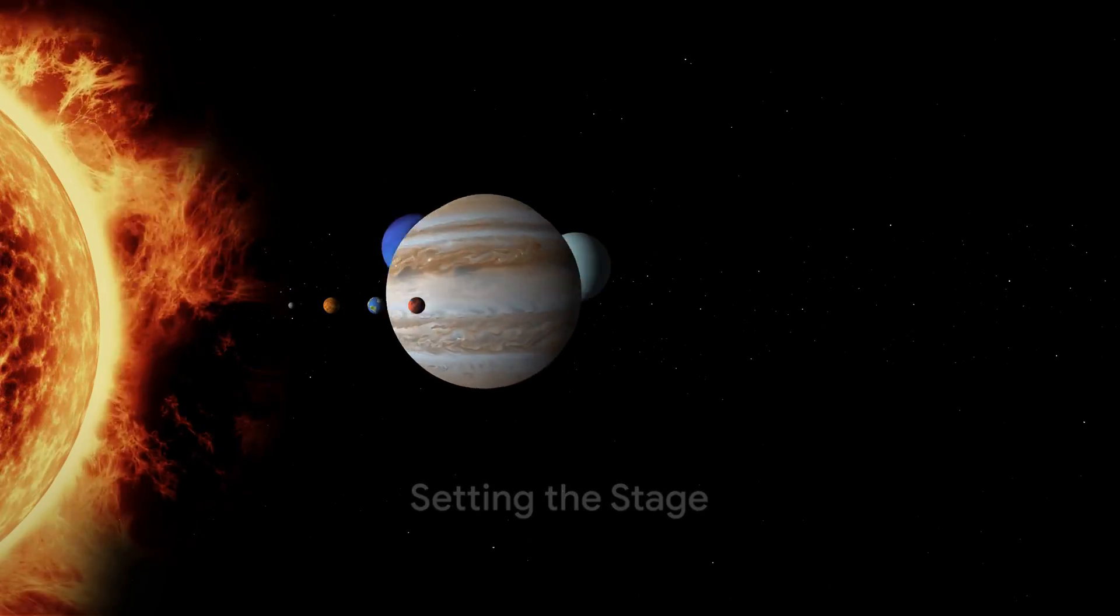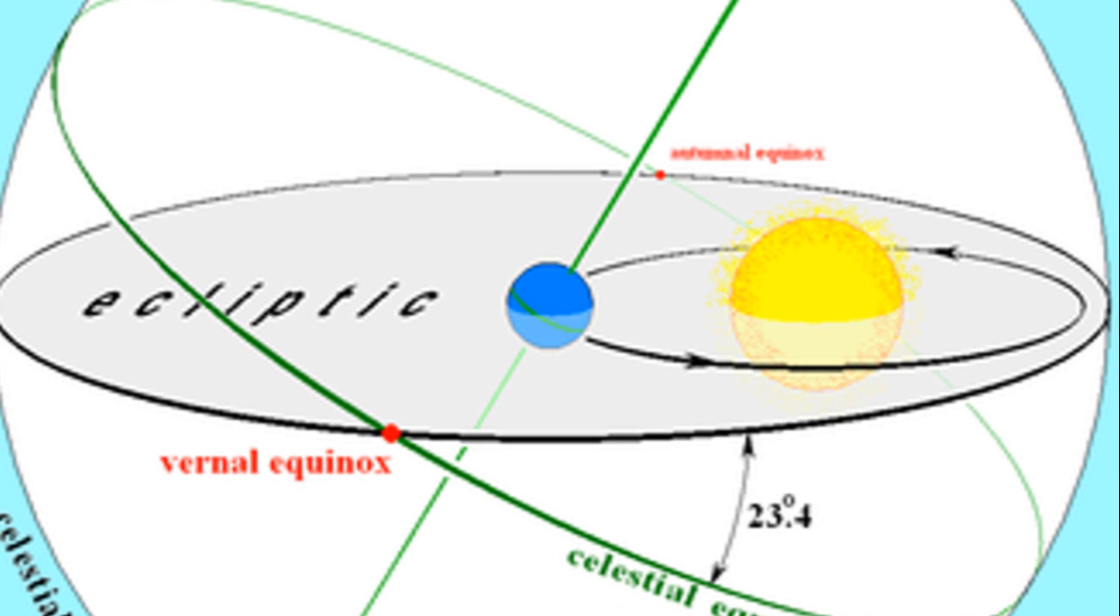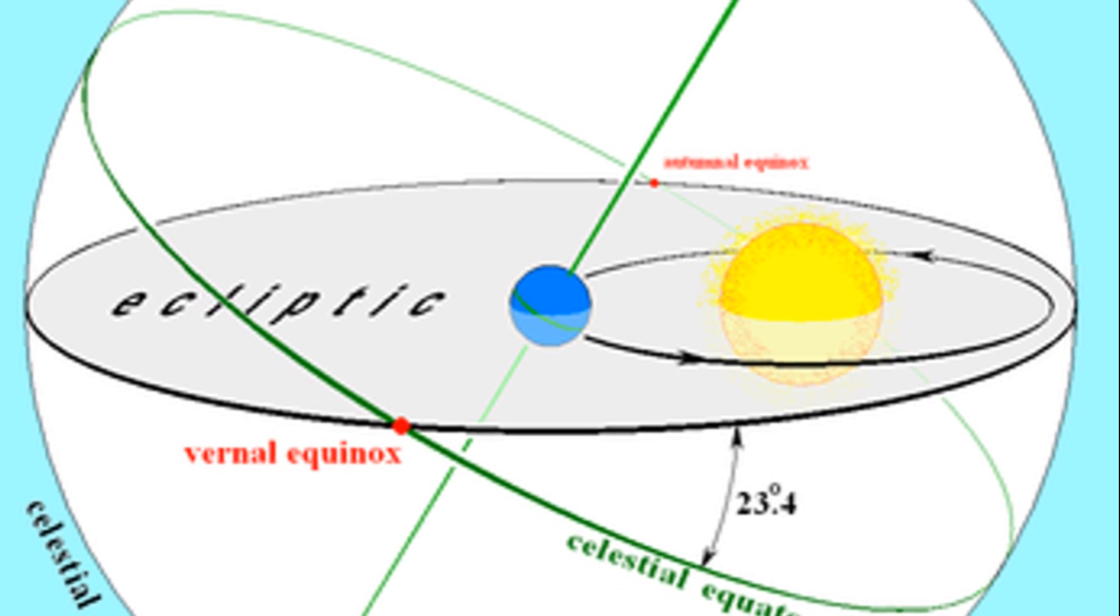From our vantage point on Earth, the solar system appears to be a vast flat plane. This isn't mere coincidence. Our planets, asteroids, and comets are all neatly aligned along this plane, forming what we call the ecliptic.